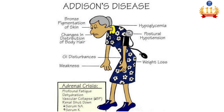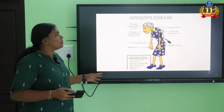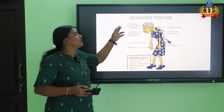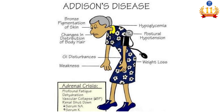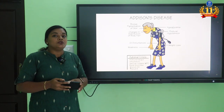The main important signs of Addison's disease are: bronze pigmentation of skin, changes in distribution of body hair, GI disturbances, weakness, weight loss, postural hypotension, and hypoglycemia. One of the most important signs is bronze pigmentation of skin. In adrenal crisis, the patient presents with profound fatigue, dehydration, vascular collapse, decreased sodium, and increased serum potassium. Importantly, in adrenal insufficiency we see bronze pigmentation or hyperpigmentation of the skin.